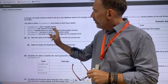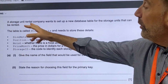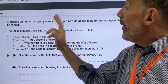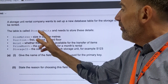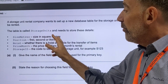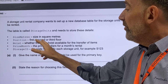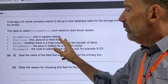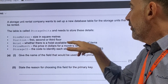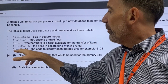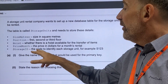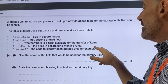So we'll start with the first one. We've got our database. A storage unit rental company wants to set up a new database table for the storage units that can be rented. The table will be called storage units and needs to store these details: the size in square meters of the storage unit, the position — whether it's first, second, or third floor — hoist, whether there is a hoist available for the transfer of items, price per month in dollars, and a storage ID — the code to identify each storage unit, for example S123.